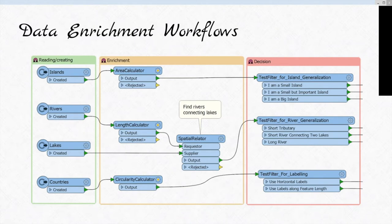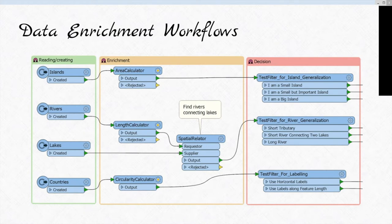For example, we have a dataset of islands. We calculate their area and then decide what to do: an island may be too small to keep at a smaller scale, or it may be small but important for navigation so you don't want to delete it. Similarly, you can calculate the length of rivers and see how they relate to a lakes dataset — a very short river might be removed, but if it connects two lakes it's important for navigation.